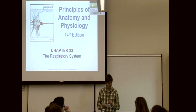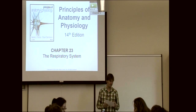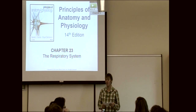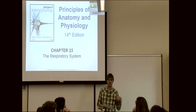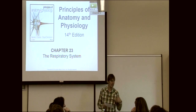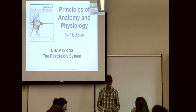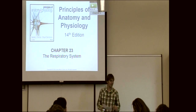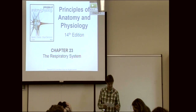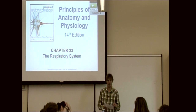External respiration is oxygen moving out of the alveoli into the blood. Ventilation is the air going in and out of the lungs. External respiration is between the alveoli and the blood. And the pressure change that causes air to move into the lungs during inhalation is low pressure in the alveoli bringing air in.